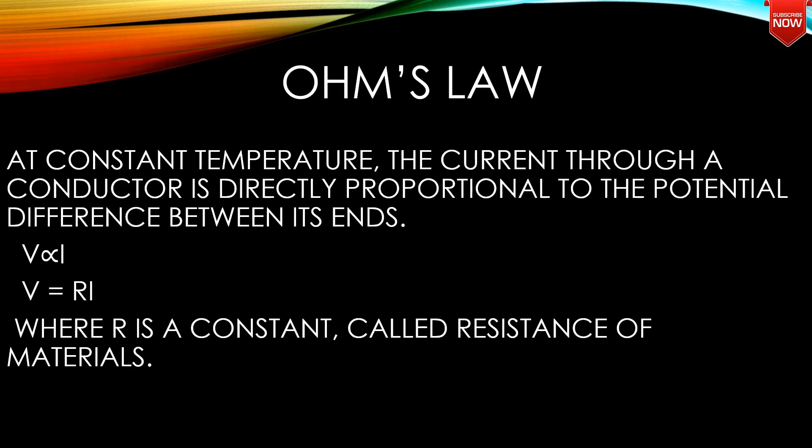Ohm's Law: At constant temperature, the current through a conductor is directly proportional to the potential difference between its ends. V is proportional to I, so V is equal to RI, where R is a constant called the resistance of the material.